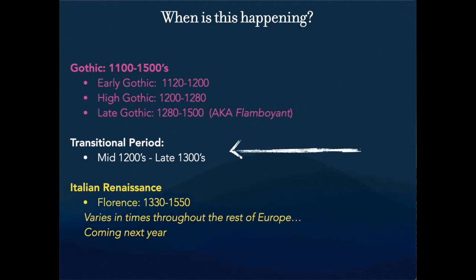The Trecento and Quattrocento represent a movement that's starting to develop — it's not quite medieval, not quite gothic, and not quite Renaissance. It's a transitional period happening in about a hundred-year window right before the Renaissance itself really starts.